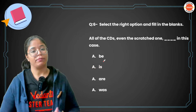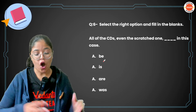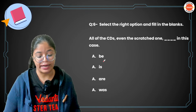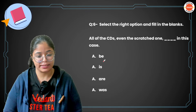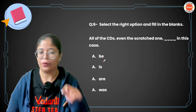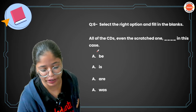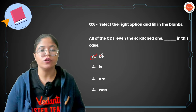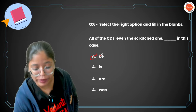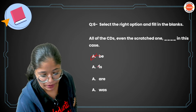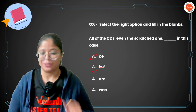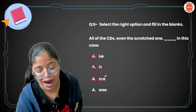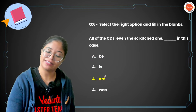Moving on to question number six: 'All of the CDs, even the scratched one, dash in the case.' 'B — in the case'? No, that doesn't fit at all. 'Is in the case'? 'All' is used here, so it should be plural. 'Was' is also singular, so that doesn't work either. The correct answer is 'are': 'All of the CDs, even the scratched one, are in the case.'